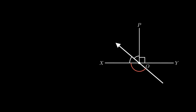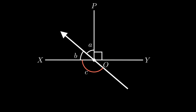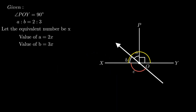Moving on to the next problem: angle BOY equals 90 degrees and the ratio of angle a to angle b equals 2:3. The number required for simplification of this ratio is x, therefore the value of a becomes 2x and the value of b becomes 3x. From the figure, the sum of angle a, angle b, and angle POY equals 180 degrees as these are angles formed on the same straight line.